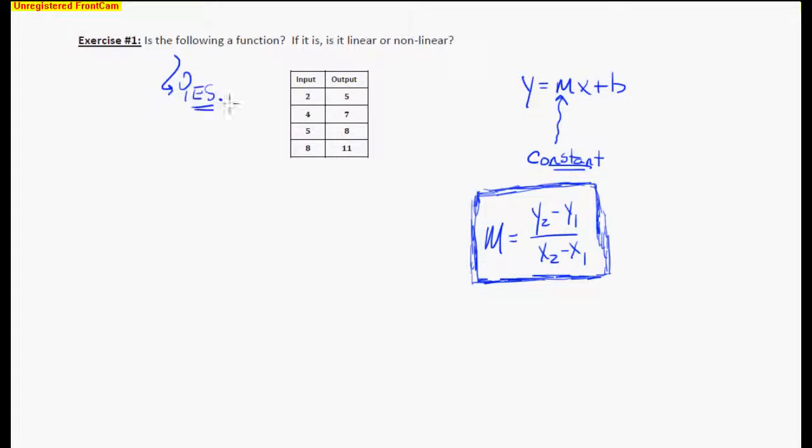Now, is it linear or non-linear? What you have to do is you need to take the slope in between each of these pairs of points. If they all come up the same, then you know that your slope is constant. And that tells you it's a linear function. That tells you when you graph it, it's going to be a line.